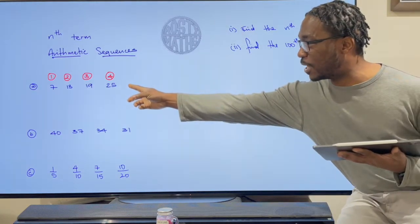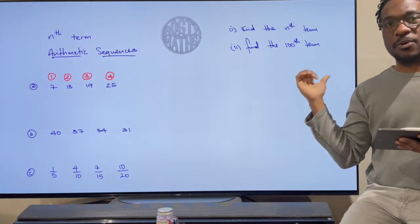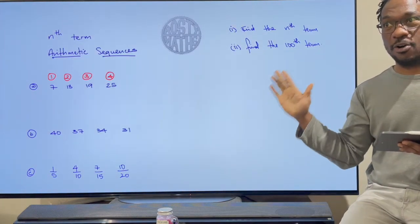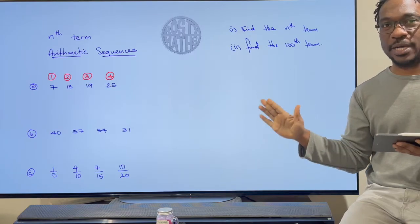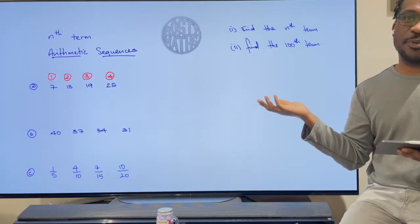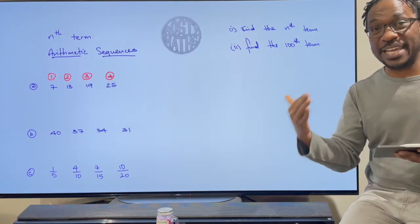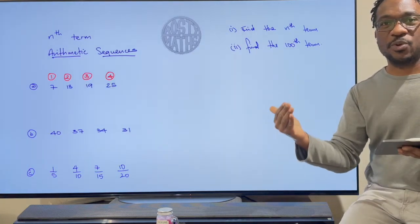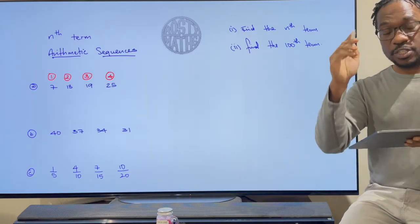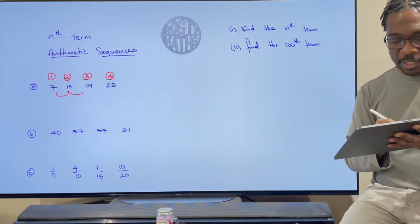Now, what if I want to find the hundredth term? I'd have to keep going and find the fifth, sixth, seventh, eighth, ninth, tenth — all the way to a hundred, which is a long way away and you're likely to make a mistake. So we're going to find the nth term, which gets us there much quicker.